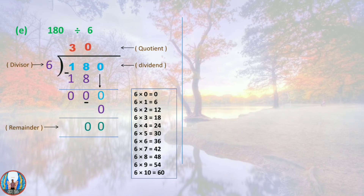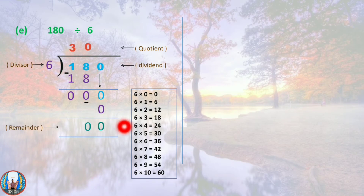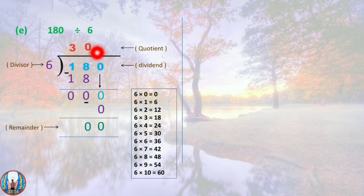Question E: 180 divided by 6. Here 180 is the dividend and 6 is the divisor. Since 1 is less than 6, we take 2 digits: 18. 6 threes are 18, so we write 3. 18 minus 18 is 0. Bring down the 0. 6 zeros are 0, so the remainder is 0 and the quotient is 30.